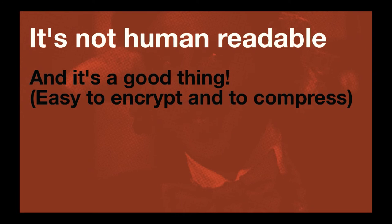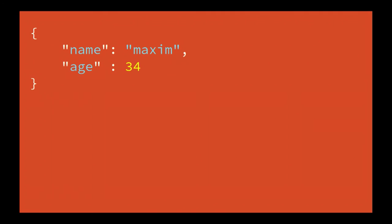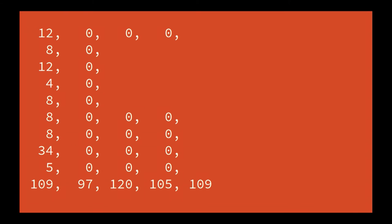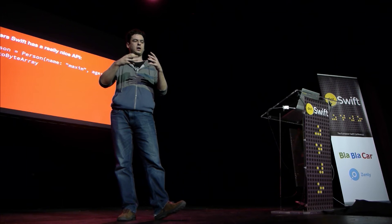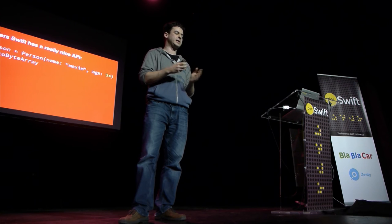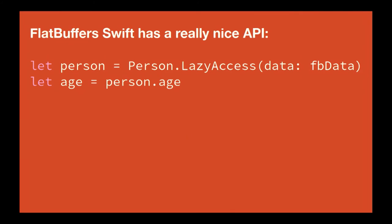Then it's not human readable, and that's a good thing, because you can just save data and people can't read it when they open the documents folder. Here is a small JSON object, and this is how it looks like as a Flatbuffer — try to reverse engineer it, it would be lots of fun. Even though it's pretty much low-level, the API itself is pretty easy. You can just create a person and serialize it into a byte array. If you want to read it, you have lazy access on the person and can directly read the properties of the object.